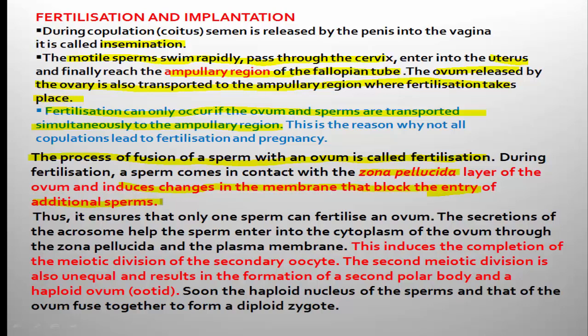The secretions of the acrosome help the sperm enter into the cytoplasm through the zona pellucida and plasma membrane. When the sperm comes in contact with the egg, the acrosome releases enzymes that break the egg membranes — corona radiata and zona pellucida — so the sperm can enter into the cytoplasm of the female gamete.